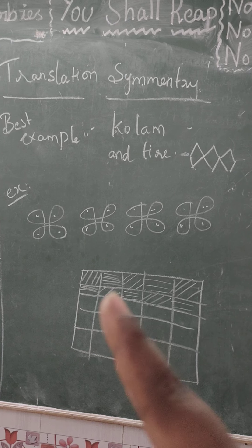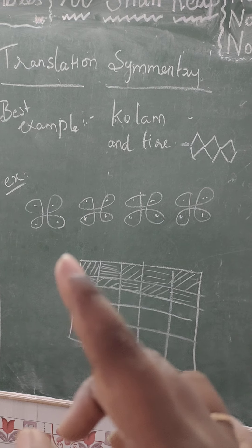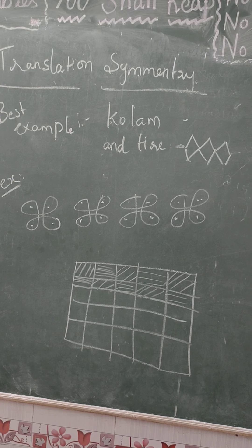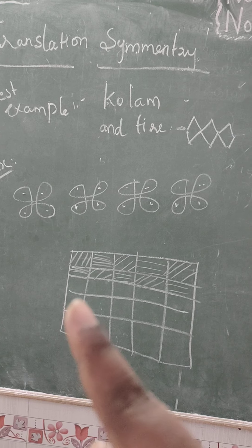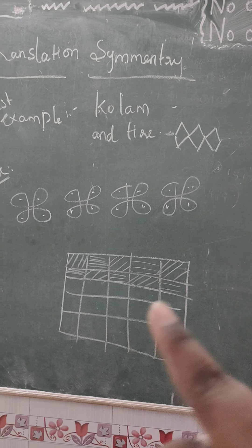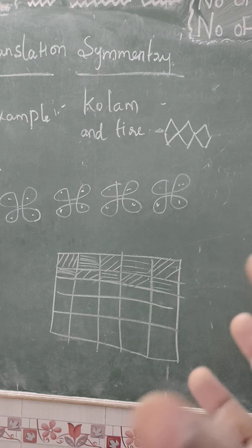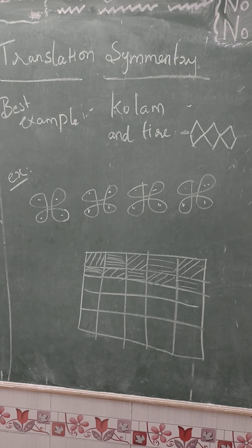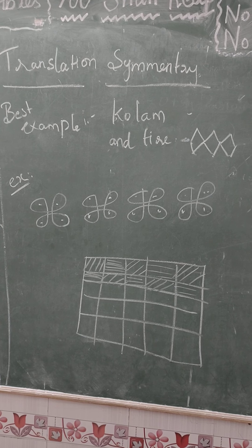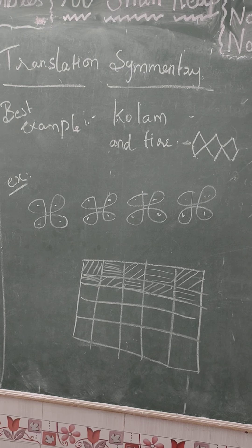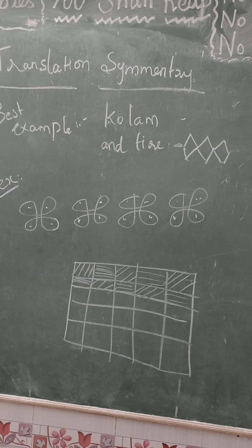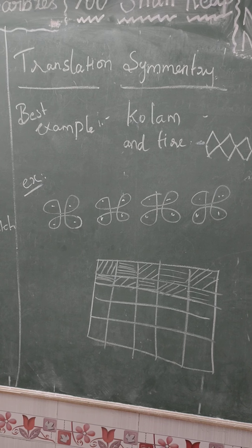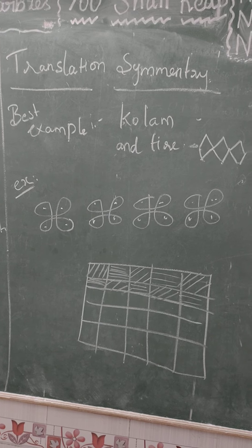Translation symmetry. We will make a clear example — I will make a design. First, we change the color and change the color. It changes like a chessboard. If you change the colors repeatedly in the same shape, this is the translation symmetry. So we look at four symmetry types: one is line symmetry, this is reflection symmetry, this is rotational symmetry, and the last one is translation symmetry. If you know these four symmetry types, you have completed the symmetry lesson. Okay students, this is the fourth chapter. Thank you, students.